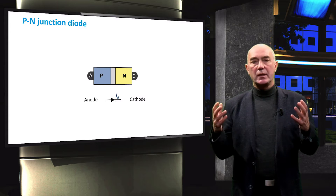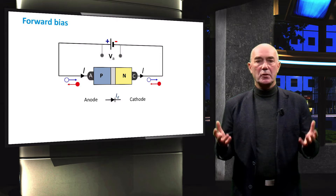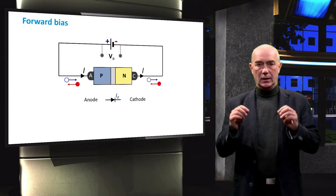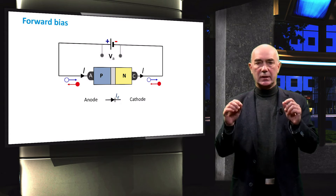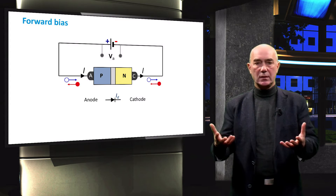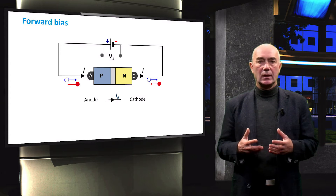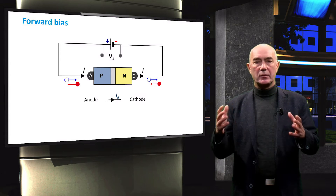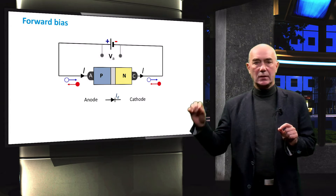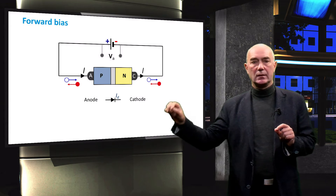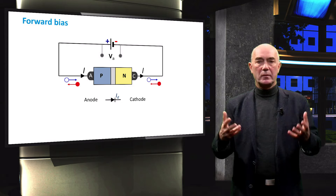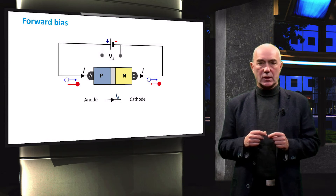Now you see a PN junction diode connected to an external voltage source. In this particular case, we are applying a positive voltage to the anode and thus the P-type region with respect to the cathode and N-type region. This is called forward biasing of the PN junction.